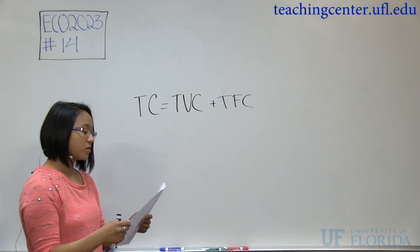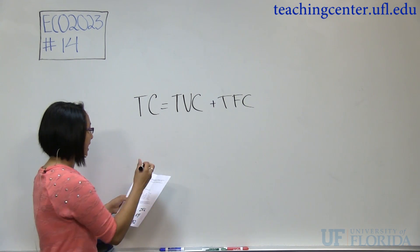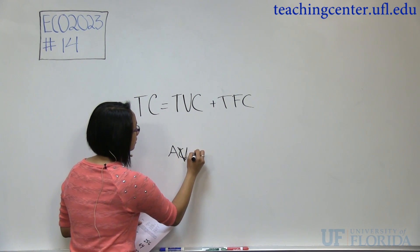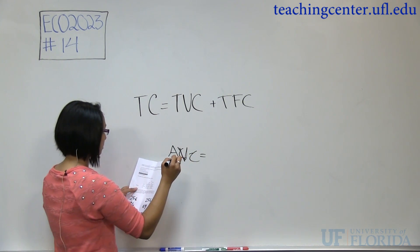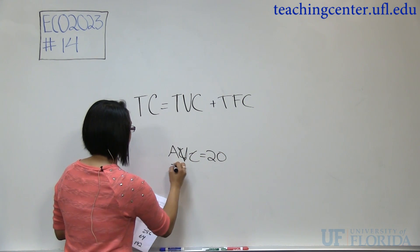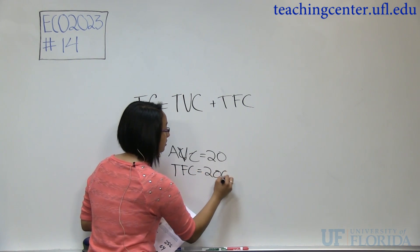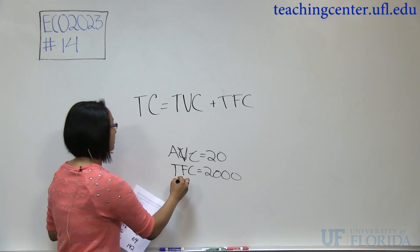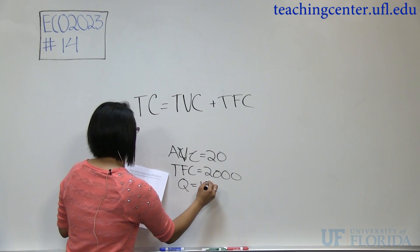And let's start with what we're given. So we have average variable cost, or AVC, equals 20, and total fixed cost equals 2,000. And we have our output, or our quantity, as 100.